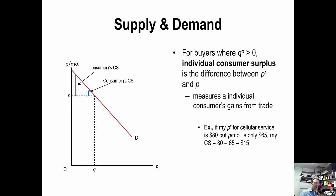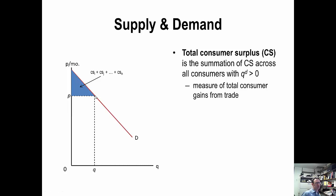For a given price, consumers with higher reservation prices will receive higher surplus because they're willing to pay more relative to the price they actually paid, whereas consumers with lower reservation prices receive lower surpluses. If you imagine a continuous range of buyers along the demand curve from the intercept down to the marginal buyer, total consumer surplus — the summation of all individual surpluses — is just the area of a triangle below the demand curve and above the price.